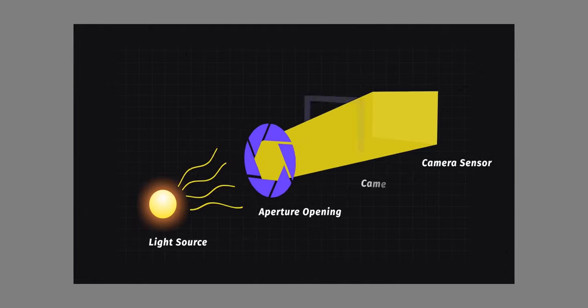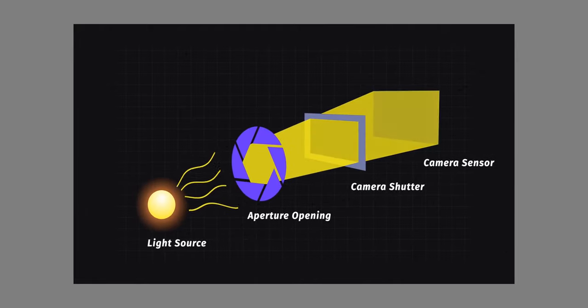Aperture and shutter speed both physically control the amount of light let into a camera. Aperture works just like the human eye — it closes to let in less light and opens to let in more light — whereas the ISO controls how sensitive the camera's sensor is to the light that hits it. Lastly, the shutter speed controls how long light would hit the sensor. Links to videos on aperture and shutter speed are in the description below.